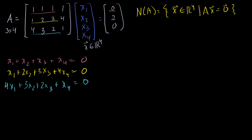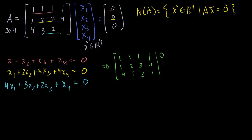We have three equations with four unknowns, so we represent this as an augmented matrix and put it in reduced row echelon form. The augmented matrix is just matrix A augmented with the zero vector. Notice that when we row-reduce, the right-hand side of zeros never changes — no matter what we multiply or subtract, it's always zero. So we're essentially just putting matrix A into reduced row echelon form.